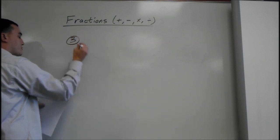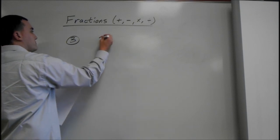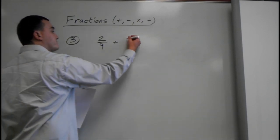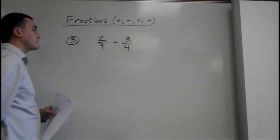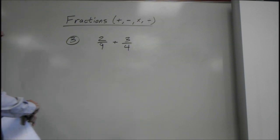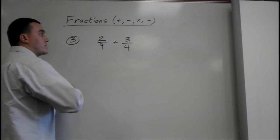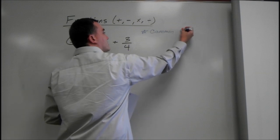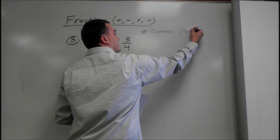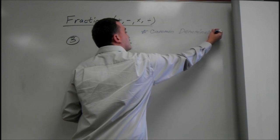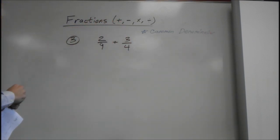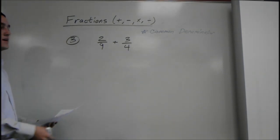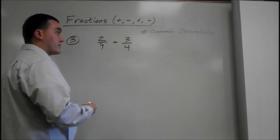So, adding for number 3, we have 2 over 9 plus 3 over 4. So, first thing we have to do when we're adding fractions, we need a common denominator. Common denominator. So, we think of what do 9 and 4 both go into. And then once we have our common denominator, we can add the tops, and that will be it.